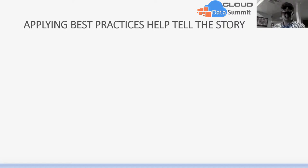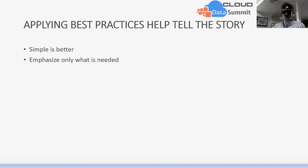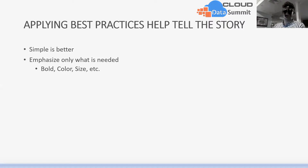Starting off, we need to understand some best practices that truly help us tell the story within data. The first thing to consider is that simple is better. When you present in front of an audience, you don't want them distracted — you just want to tell your message quickly and effectively. The next thing is to emphasize only what is important. You don't want to put more on the screen than what's needed. We can use bold, color, size, proximity, or other ways to emphasize only what we want the audience to see.